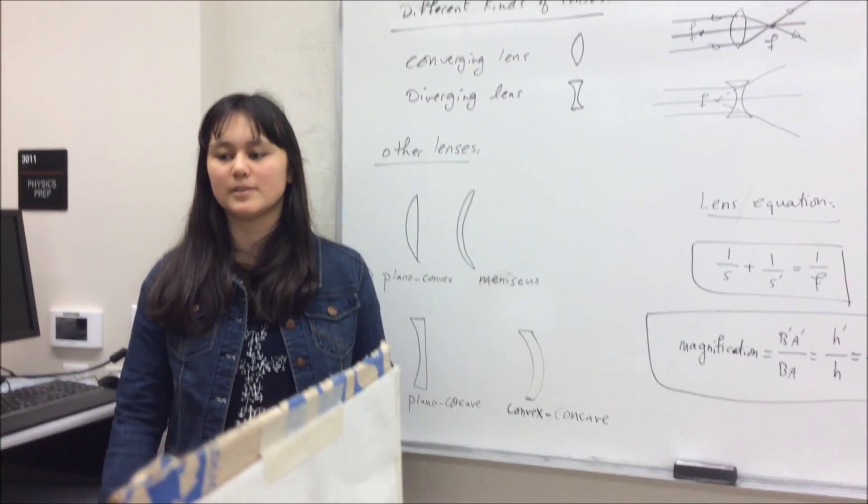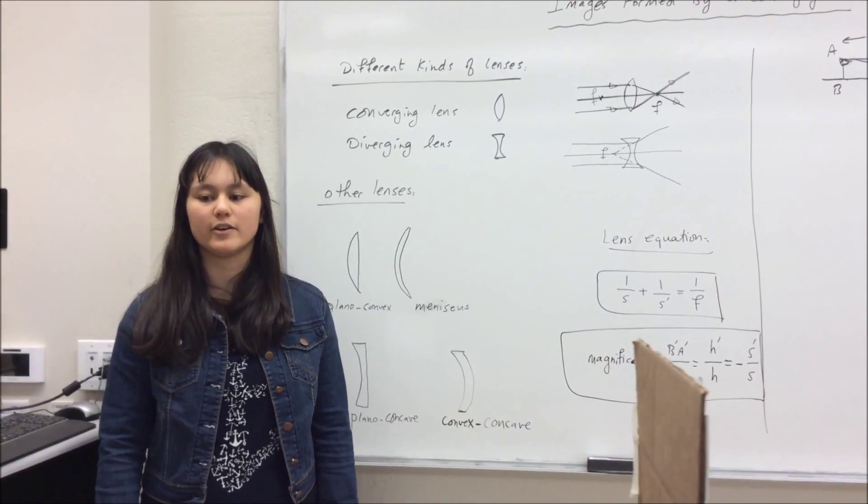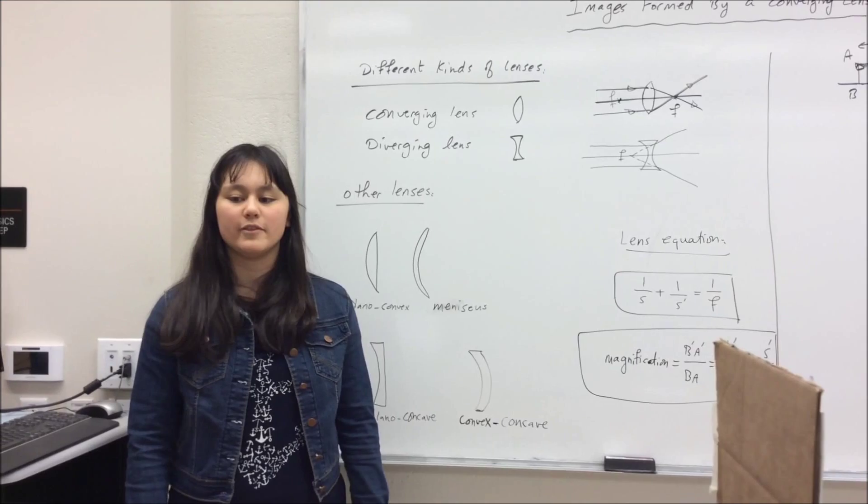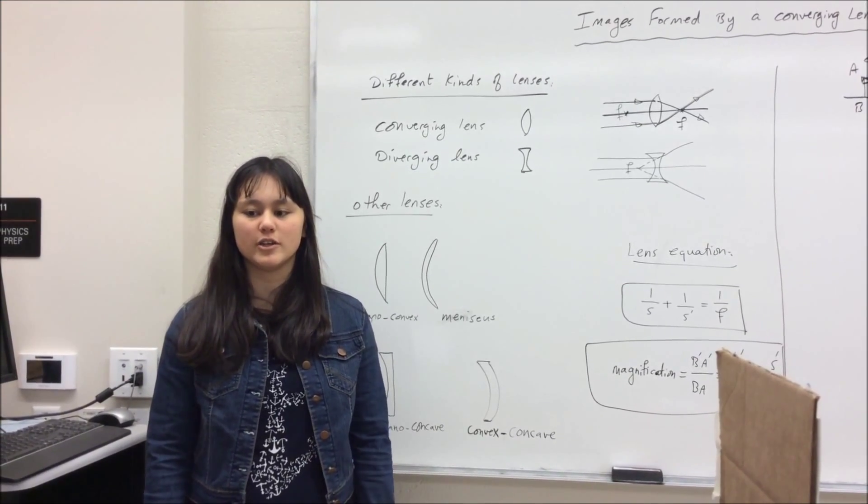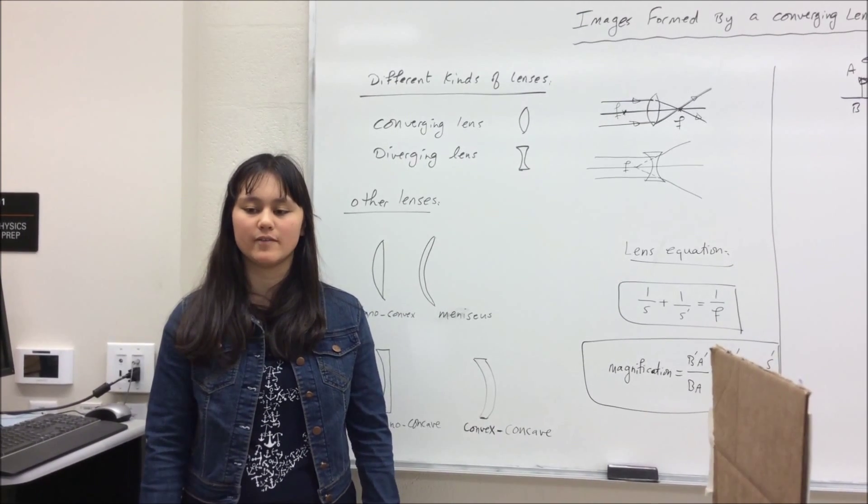So the objectives of this experiment is going to be to determine the focal length of the converging lens, find the image formation, and determine whether the image is real or virtual, and also to determine the characteristics of the image.